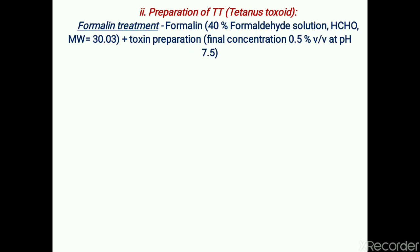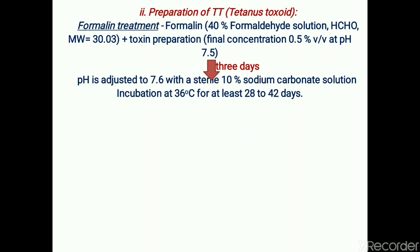In the next step, preparation of tetanus toxoid is done. Formalin, which is 40% formaldehyde solution, is mixed with crude toxin preparation so that the final concentration of formalin is 0.5% v/v at pH 7.5. This step is for the inactivation of toxin — converting it to its inactive form called toxoid. This treatment takes approximately three days. The pH is adjusted to 7.6 with sterile 10% sodium carbonate solution, which acts as the neutralizing agent for formalin.